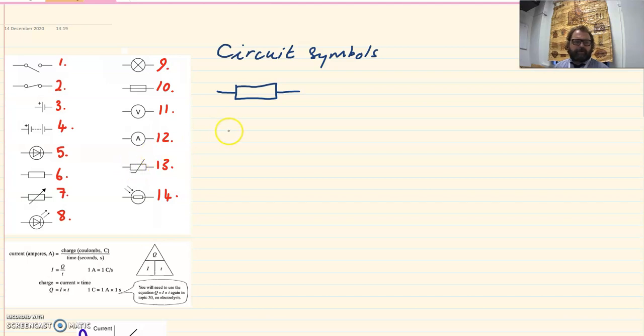There are two versions of a similar symbol that looks like this, which is the symbol for a diode. If there is nothing else, like number five, it's a diode, and it only allows electricity to flow in one direction, in one way around the circuit. The addition of two arrows turn this symbol into a light-emitting diode, a diode that gives out light.